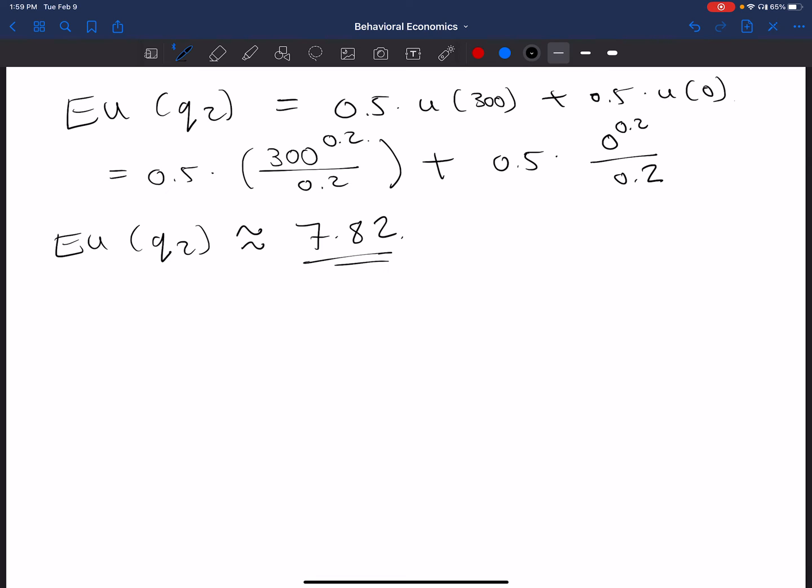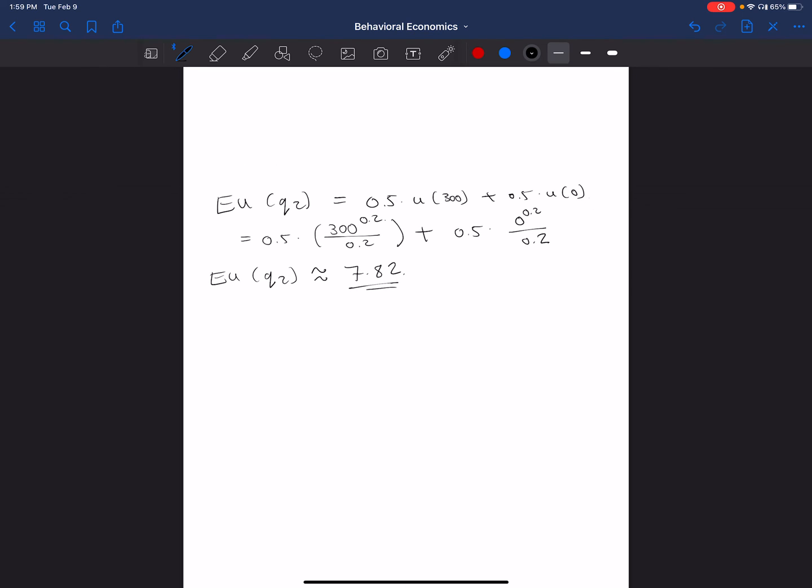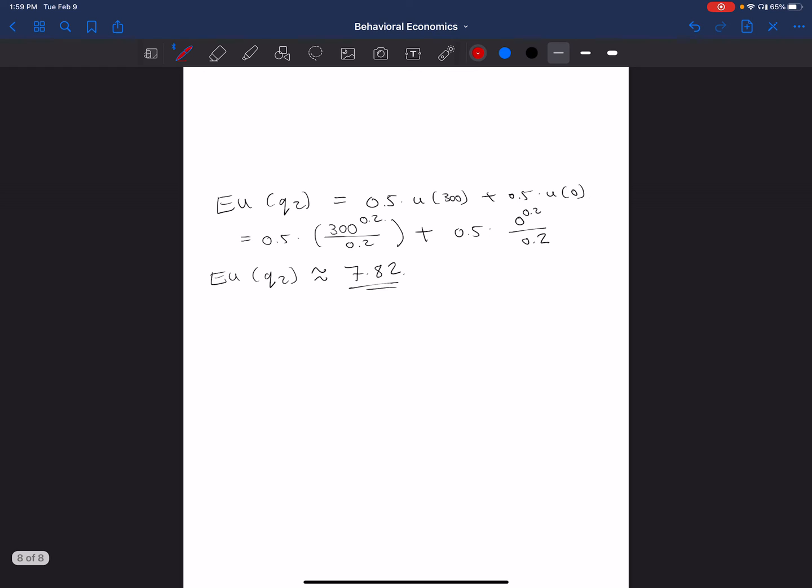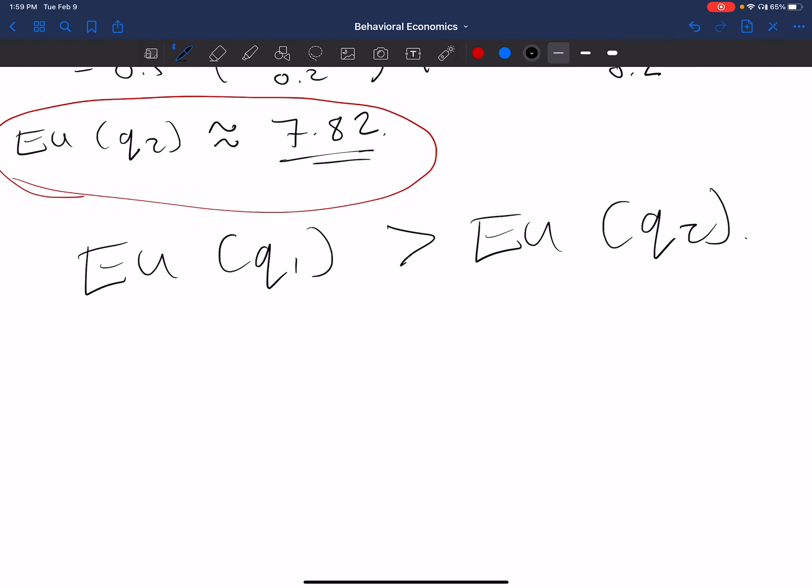So what do we see there? In this case, we have EUQ1, that's equal to 12.56. And then over here we have EUQ2 equal to 7.82. What does that mean? It means that EUQ1 is greater than EUQ2. So someone here is choosing the more certain, well it's obviously certain, the less risky prospect to the more risky prospect.